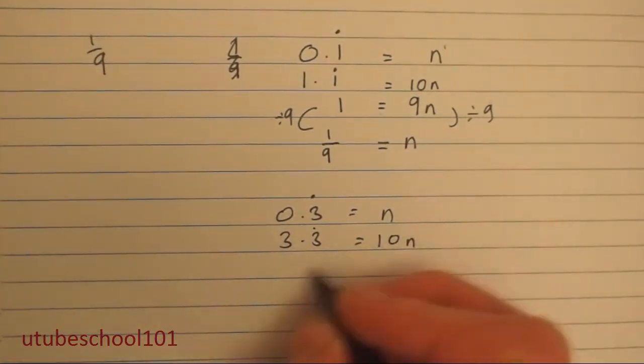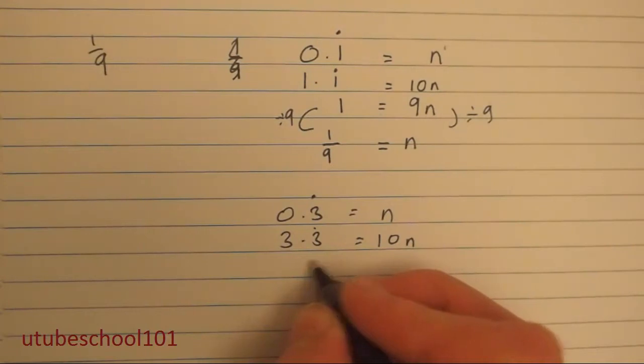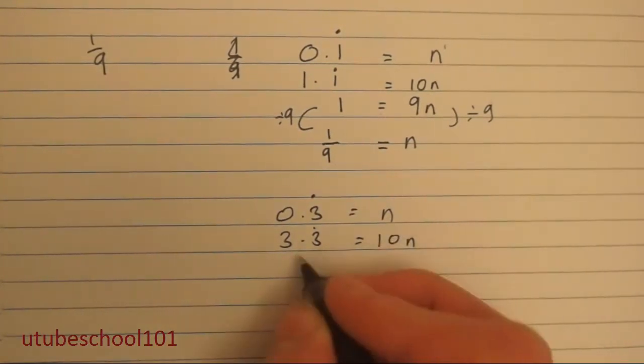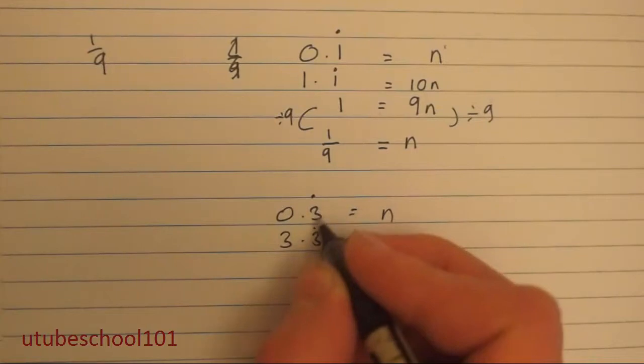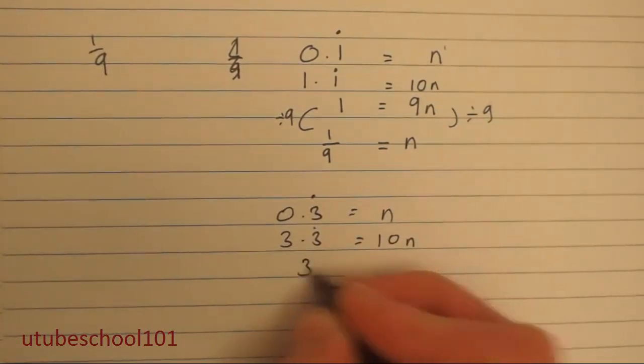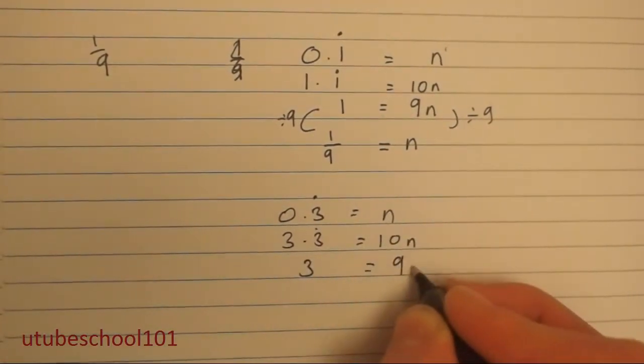So we're going to subtract 9, we're going to subtract n from both sides. So 3.3 minus 0.3 is equal to 3 equals 9n.